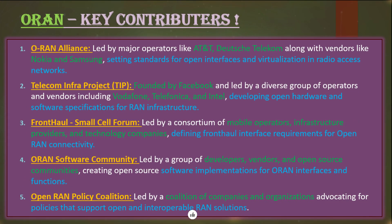Let's quickly talk about the communities working towards standardizing the OpenRAN ecosystem. TIP — the Telecom Infra Project — works on new innovations. The O-RAN Alliance, developed by big operators like AT&T, T-Mobile, Orange, and others, works to develop open specifications and standardize them. Another forum is the Fronthaul Small Cell Forum, working to develop the fronthaul interface connecting radio units with the distribution unit — aiming to replace proprietary interfaces with an open one.